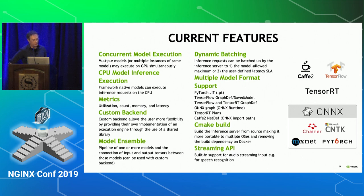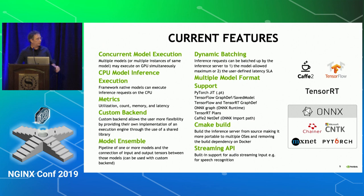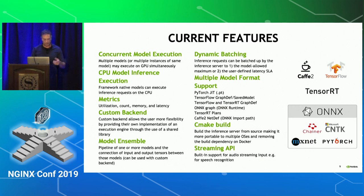The current main features: you can have concurrent model execution — multiple models running on a single GPU. You can have dynamic batching, which means TensorRT inference server optimizes batching so that depending on the request, it can batch together multiple inferences. It supports multiple model formats: PyTorch, TensorFlow, Caffe2, and many more. Recently we added model ensemble, which means we can run multiple models connecting tensor outputs and inputs in the backend. It also exposes metrics.